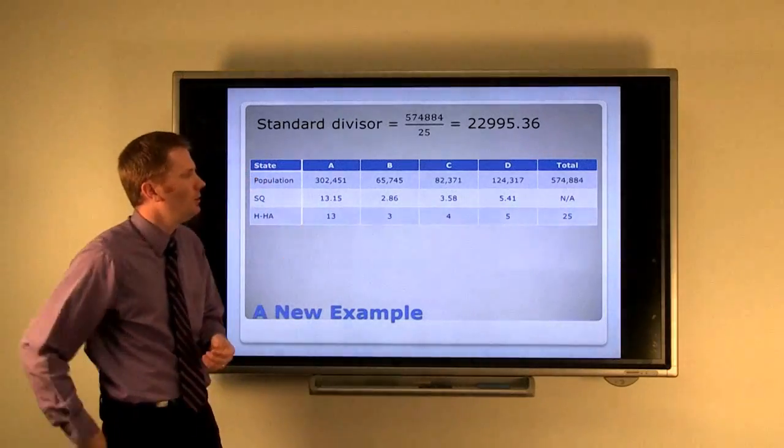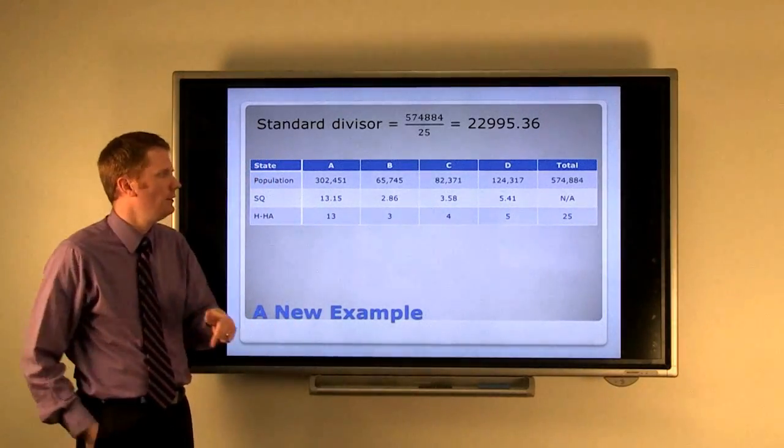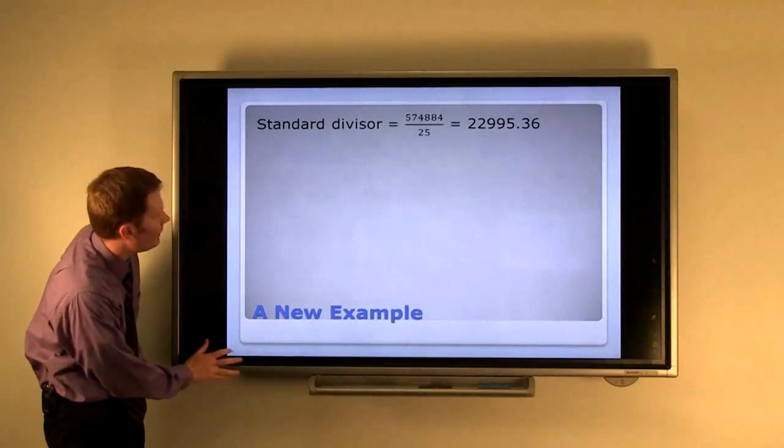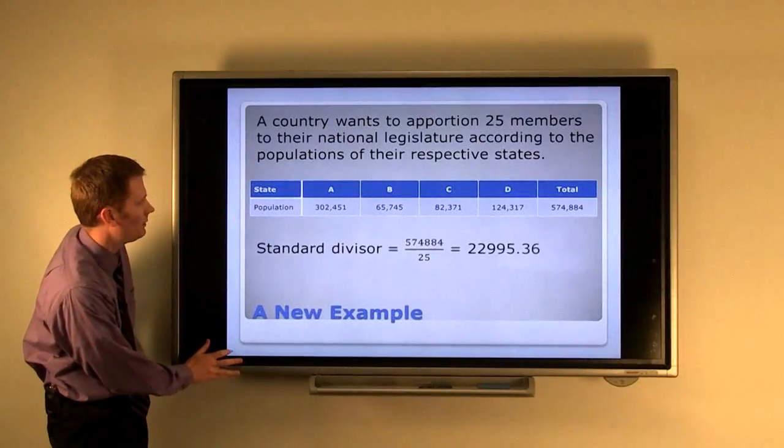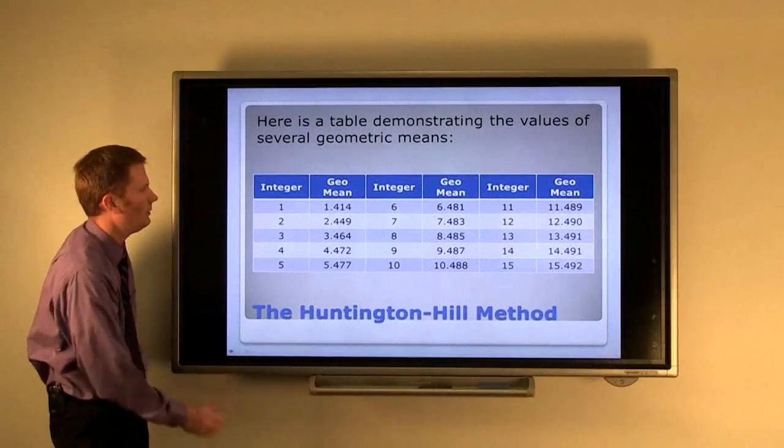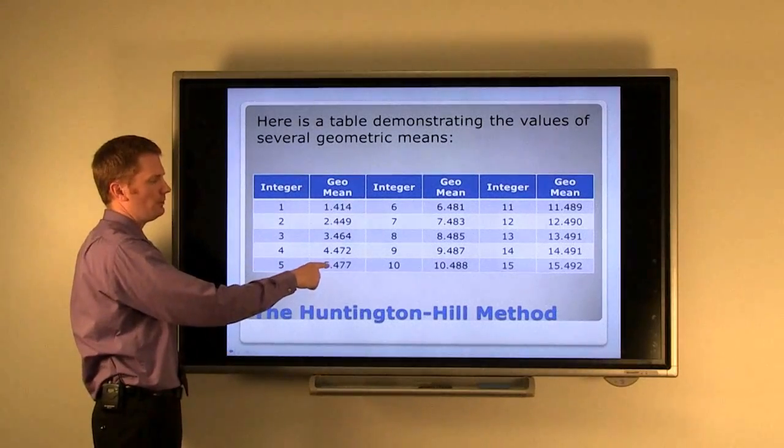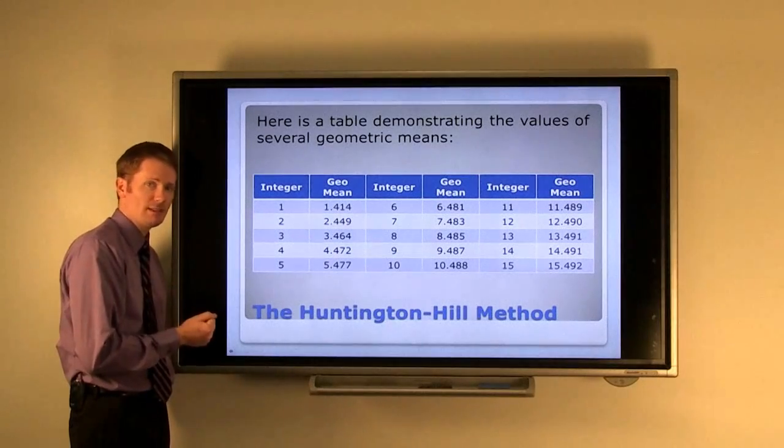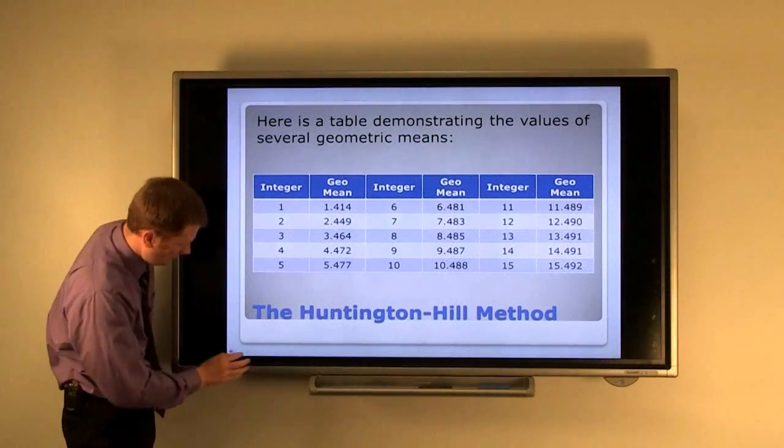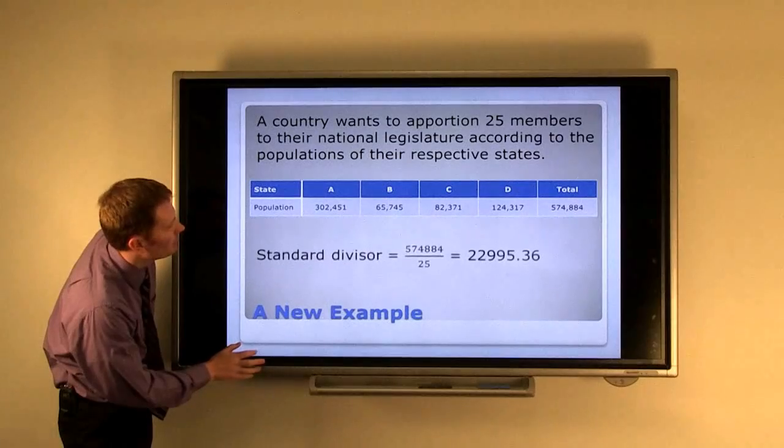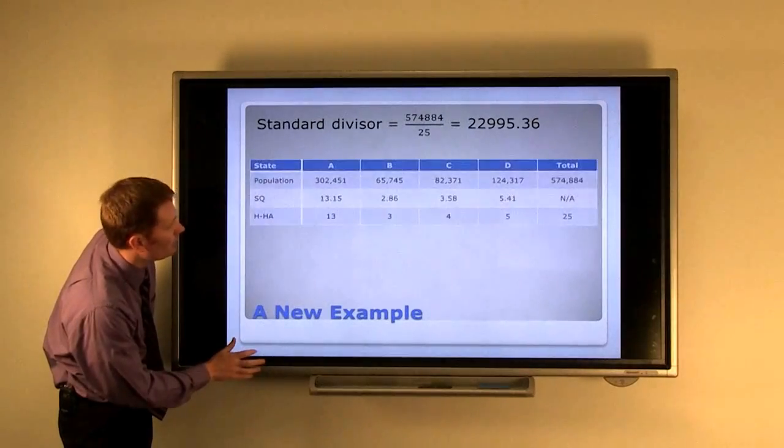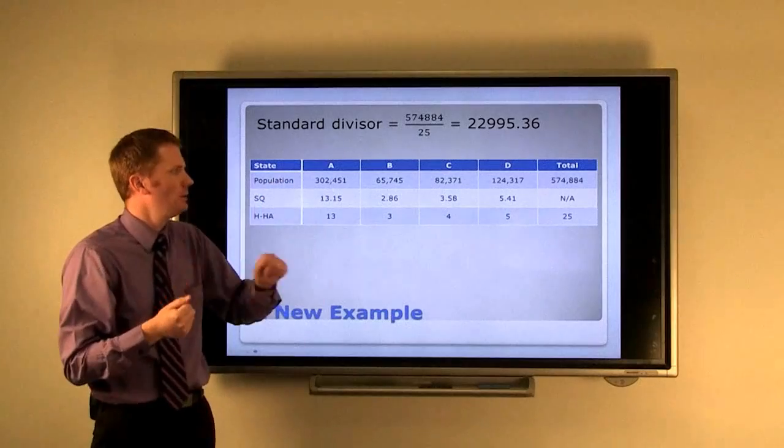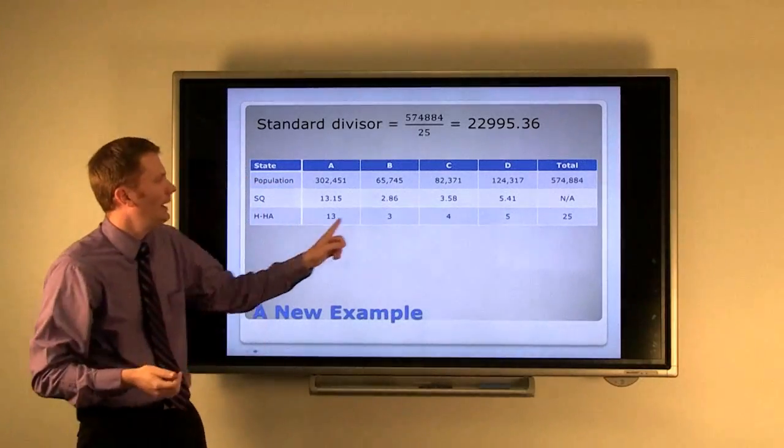This one you may not remember though: 5.41. We need to consult the table and see what the geometric mean actually is for 5. The geometric mean is 5.477, so you would need to have a decimal larger than .477 in order to go up. We have .41, which is not larger than .477, so it goes down to 5.